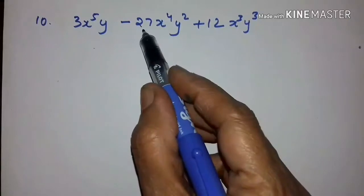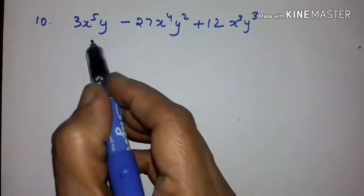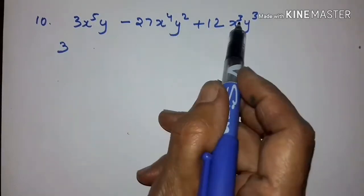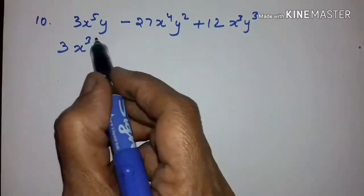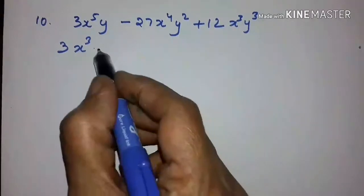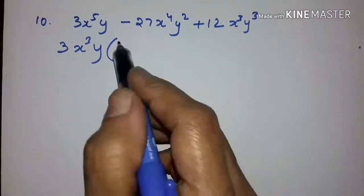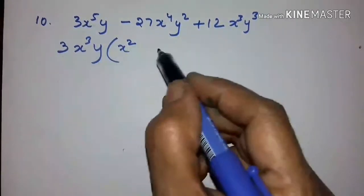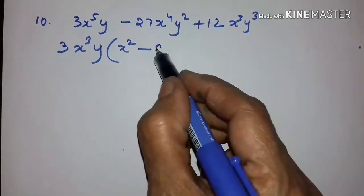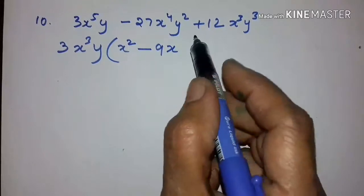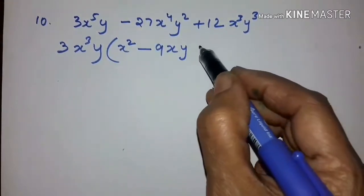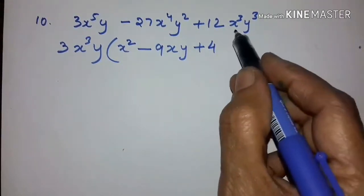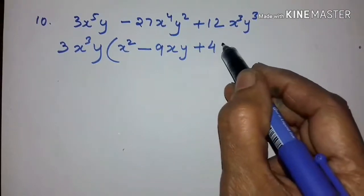In the next problem, 3 is common. Here x cubed is common. For the y terms: y squared, y cubed — y is common. Taking out 3x cubed y, what remains is x squared. Then y has gone out, and 9 remains. X cubed has gone out, only x remains. Y has gone out, y remains. Plus 3 fours are 12, 3 has gone out so 4 remains, x cubed and y have gone out, so y squared remains.